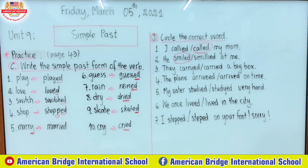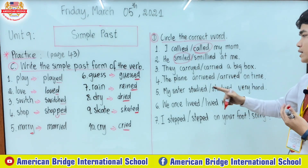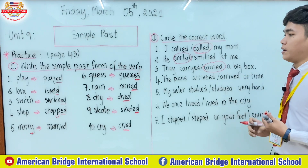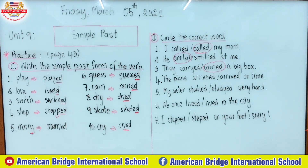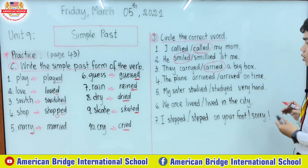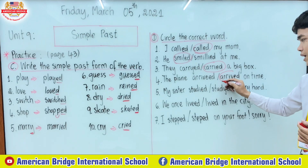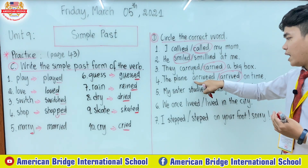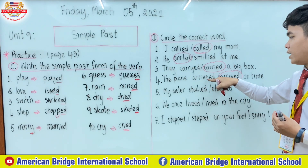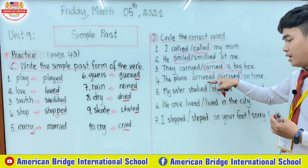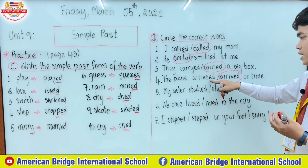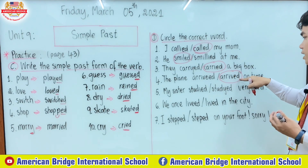Number three: 'They carried a big box.' The wrong spelling is the first one; the correct spelling is the second one — 'carried', we changed y to -ied. Number four: 'The plane arrived on time.' The second one is correct. The verb 'arrive' is spelled a-r-r-i-v-e, and at the end it already has the letter e, so we don't add more e — we just add the letter d: arrived.